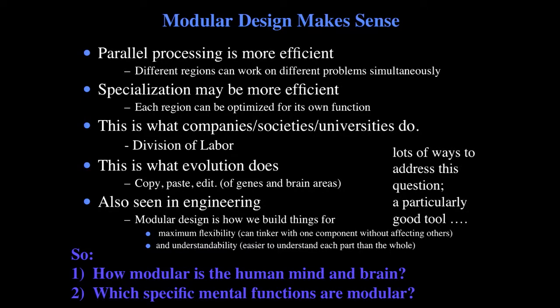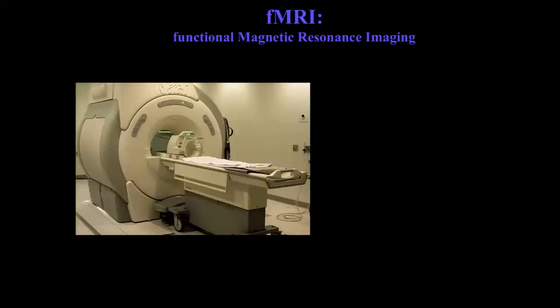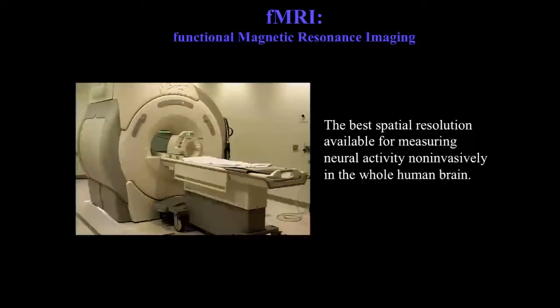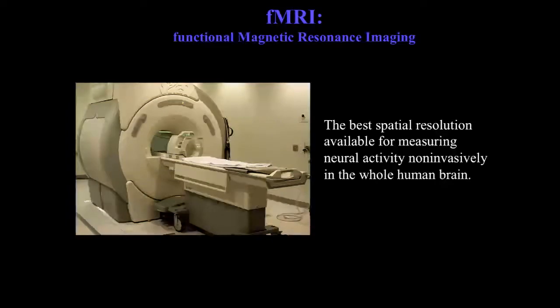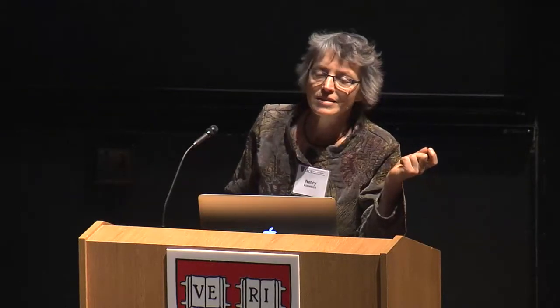A particularly good tool for this kind of question is functional MRI. The main advantage is it has the best spatial resolution available non-invasively to look at the whole human brain in vivo. Even so, its spatial resolution is appalling compared to other methods. A single 3D pixel or voxel in a typical MRI image contains hundreds of thousands of neurons or 10 billion synapses. So the real miracle of functional MRI is that we ever see anything at all — but we do.